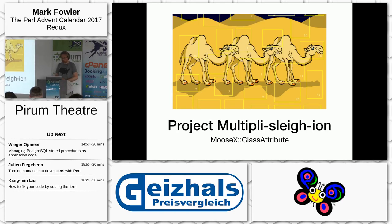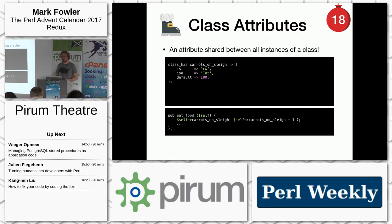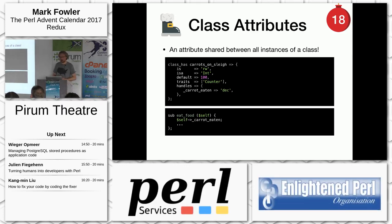A little more confusing is MooseX::ClassAttribute, which allows us to define class attributes. Consider reindeers that eat carrots: they have an eat_food method that eats the carrot, and we need to keep track of all the carrots. One option is to keep this inside the reindeer class itself as a class attribute. With 'class_has' rather than 'has', the value of this attribute is shared amongst all of the reindeer. It's a true attribute, so we can give it the counter trait, use 'handles carrots_eaten', and suddenly the eat_food subroutine becomes a lot easier to write.